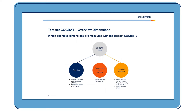Here you can see the dimensions we are measuring. On one side, attention — including alertness, divided attention, and processing speed. Then we have figural long-term memory measured by the FGT. And we are also measuring executive functions like verbal working memory, cognitive flexibility, and planning ability.